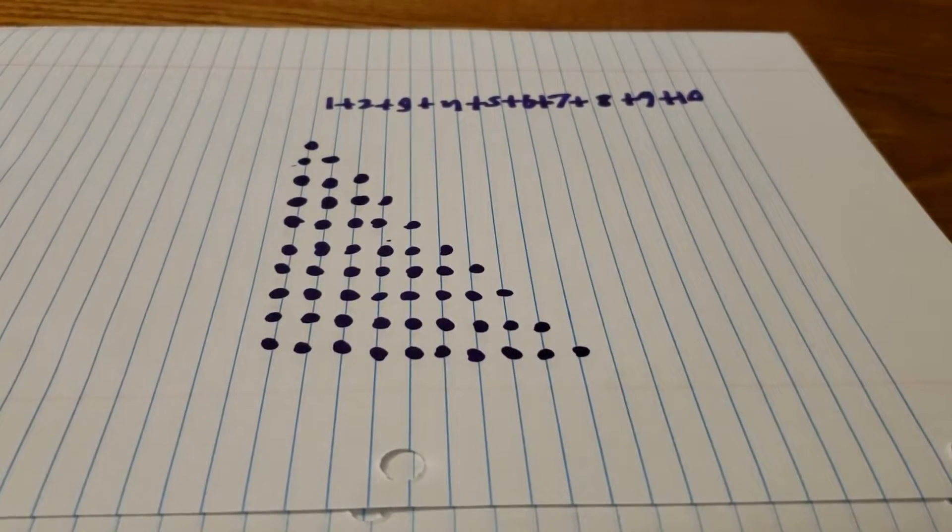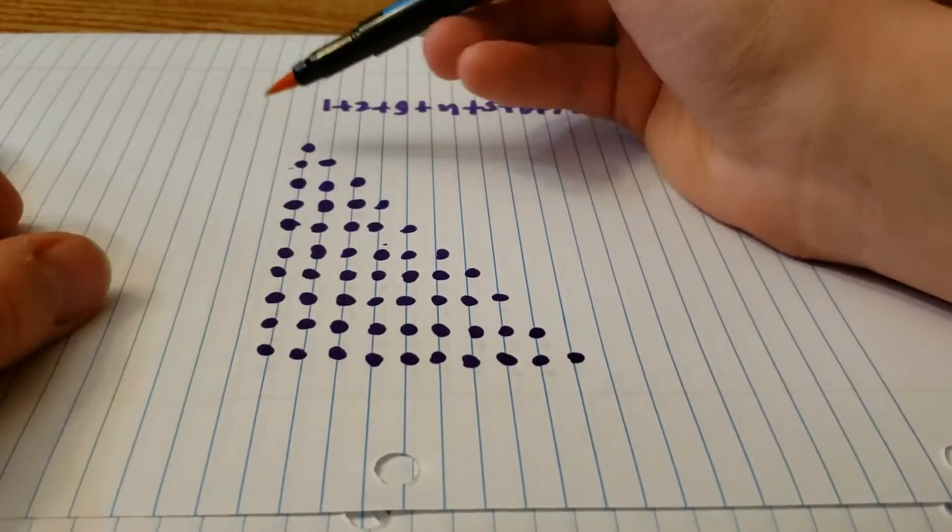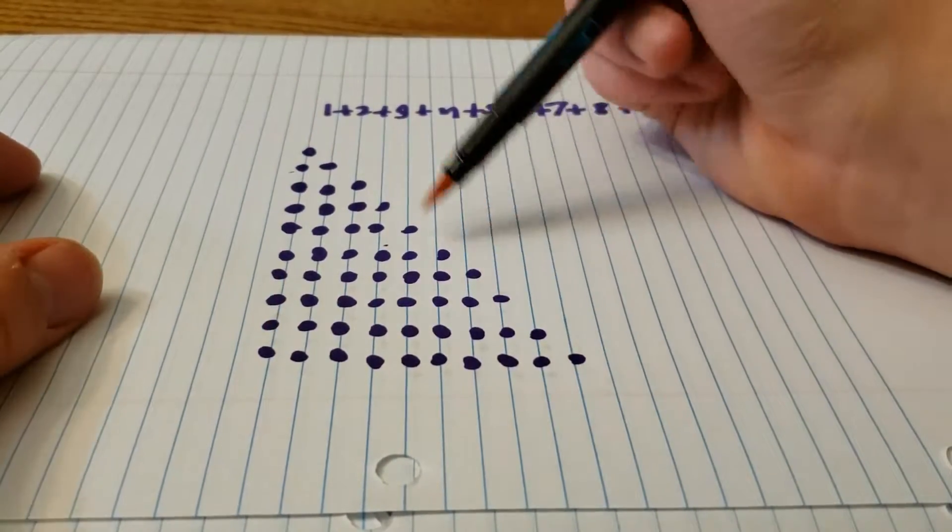Now that we've done that, we're just going to attach a copy of the same triangle to the diagonal edge of that, and that'll give us a rectangle.